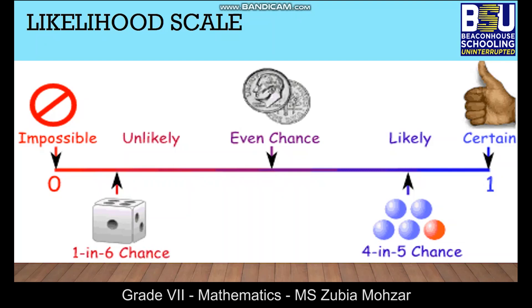Those terms are: impossible, unlikely, even chance, likely, and certain. Now it's your turn to think about different events that can be placed on this likelihood scale.